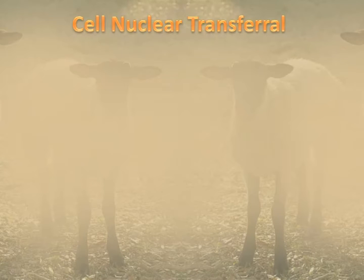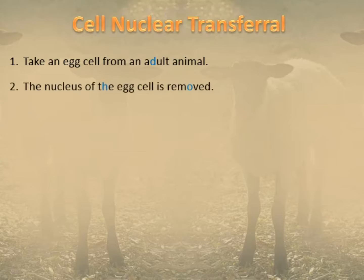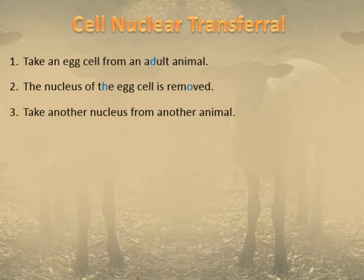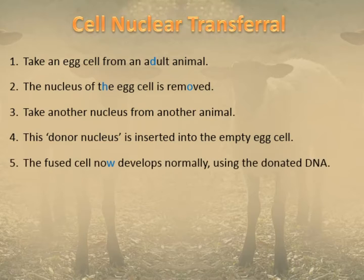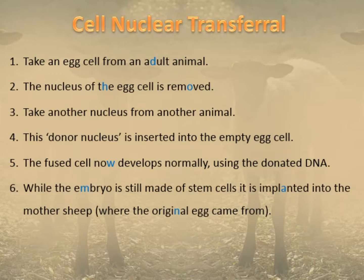How do you create an animal like Dolly? It's a process called cell nuclear transfer. First, you take the egg cell from an adult animal and remove its nucleus — the gamete information is discarded. Then you take a diploid nucleus with a complete set of genetic information from another animal and insert that donor nucleus into the empty egg cell. The egg cell activates the nucleus to become pluripotent — it becomes a stem cell — and can now develop normally using the donated DNA as if it were a newly fertilized egg. While the embryo is still made of stem cells, it's implanted into the mother sheep, and if all goes well it develops normally.